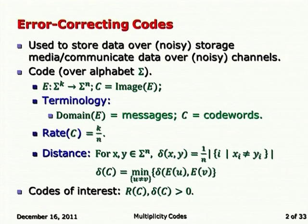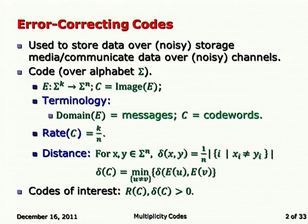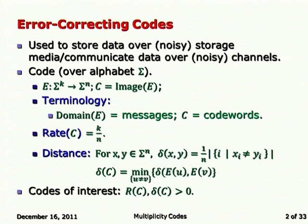The relative distance between x and y is the fraction of coordinates on which they differ. If x and y are different, you just ask whether they are equal or not equal at each coordinate. The minimum distance of a code, delta(C), is the minimum over all distinct messages of the distance between their encodings. In codes of interest, we want an asymptotically growing family where both the rate and delta are greater than some fixed constant.